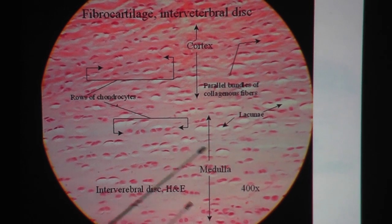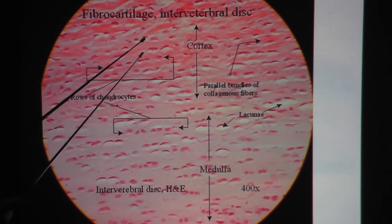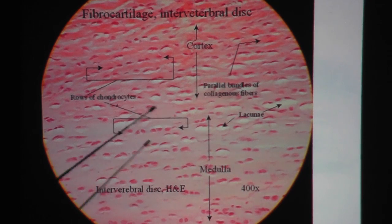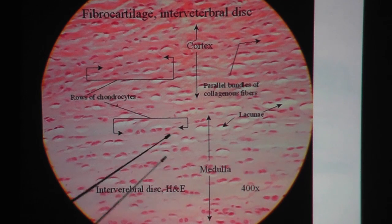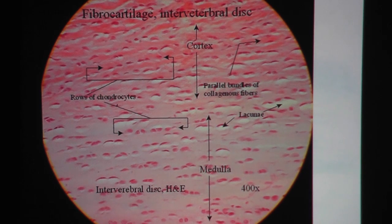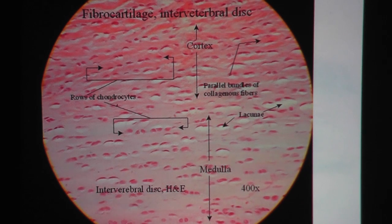This is the low-power view of fibrocartilage in the intervertebral disc. Even on this low view, you can see the chondrocytes. You also see the little white area — the white space around them — and that would be lacuna. In between the chondrocytes, in the matrix, we would have the waves of the collagen fiber, although on the low-power view the waviness of the collagen fiber is not obvious.